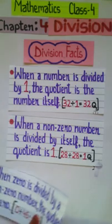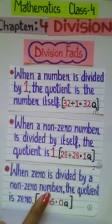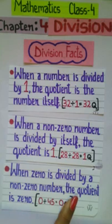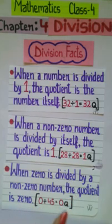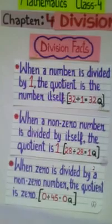Next, when 0 is divided by a non-zero number, the quotient is 0. Example, 0 divided by 45 equals to 0 being the quotient.